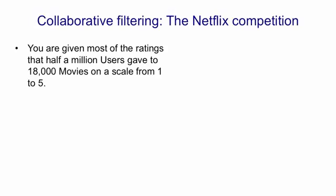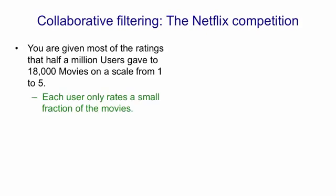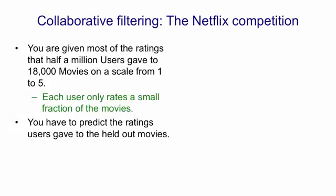In that competition, you're given most of the ratings that half a million users gave to 18,000 movies, and each movie gets rated on a scale from one to five. Each user only rates a small fraction of the movies, but even so there's about a hundred million ratings. You have to predict the ratings that the users gave to held-out movies, and if you can do that well, you actually win a million dollars if you're the best.